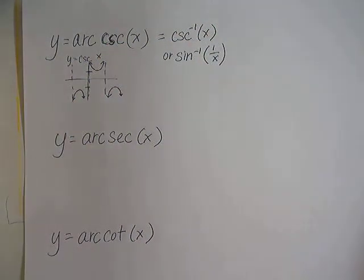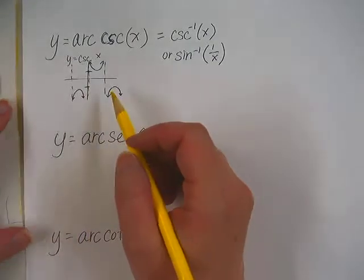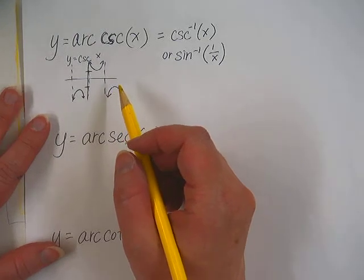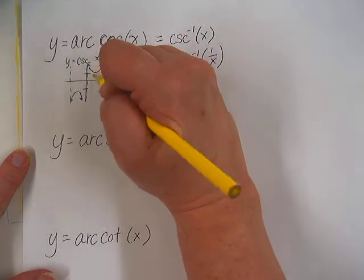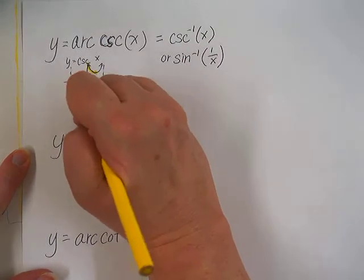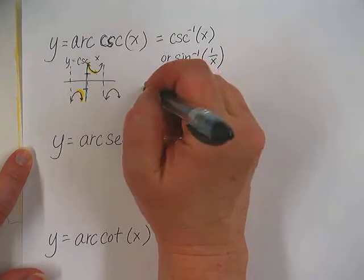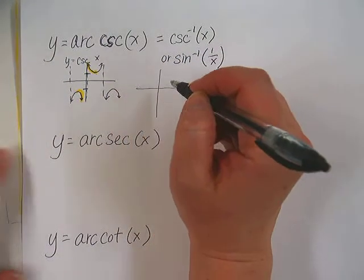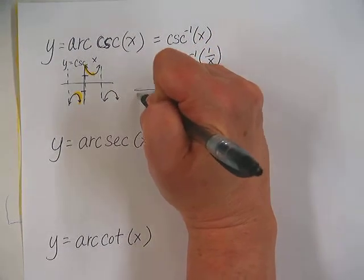When we use the inverse, again, we have to restrict it so that we're just using certain pieces. And for this one, it's going to correspond with sine. So we're going to be using quadrant 4 and quadrant 1. So it's going to be like that piece there and that piece there. So when we do the inverse of it, it will look something like this and this.